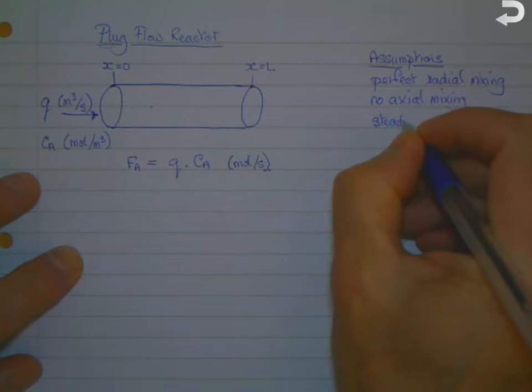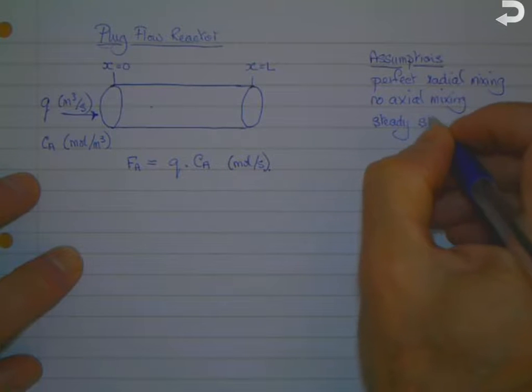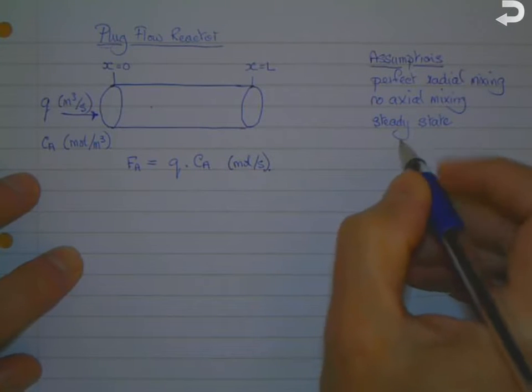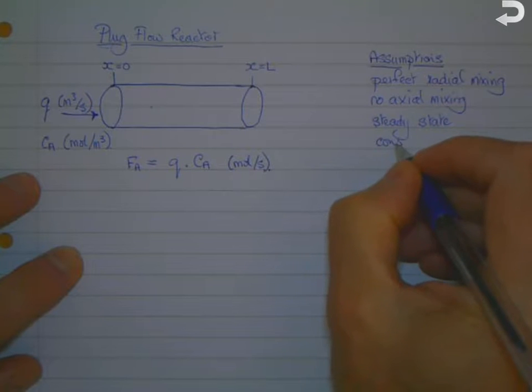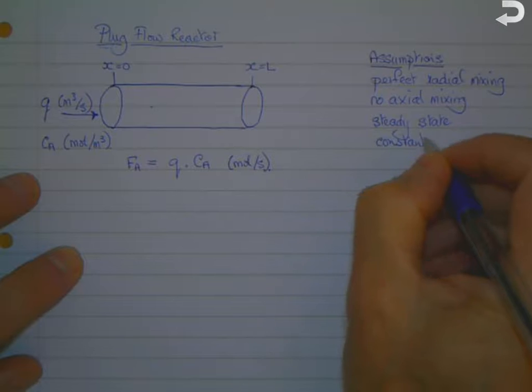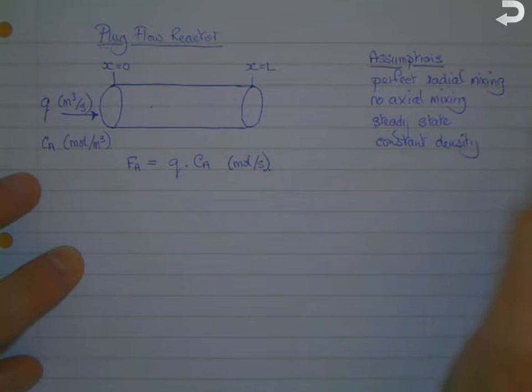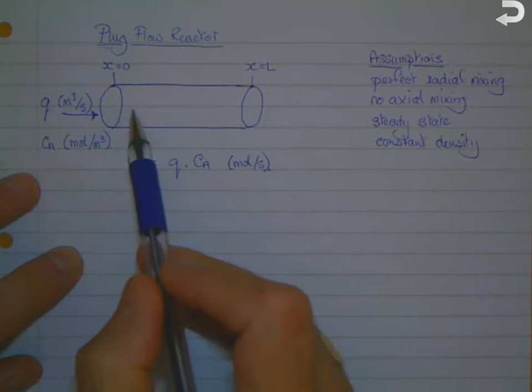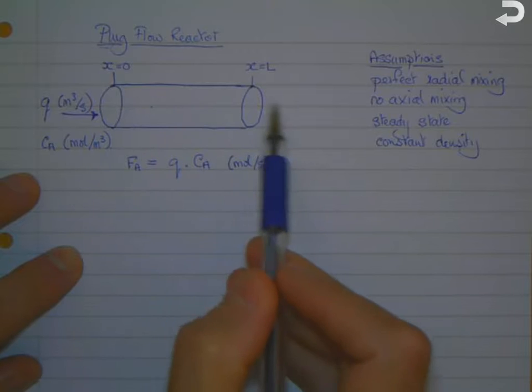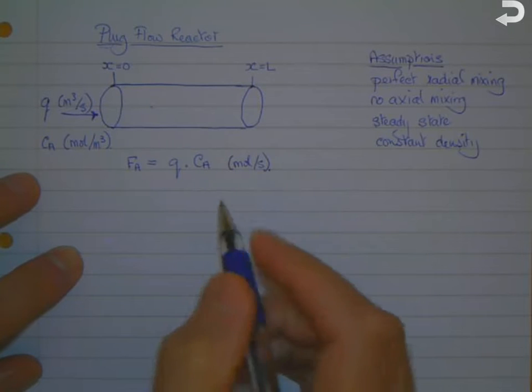It's a continuous reactor, and we're going to assume that we've reached steady state so that the conditions are not varying with time. We're also going to assume that we have constant density, so the density of the material at the inlet is the same as it is at the outlet and it's the same across the length of the reactor.